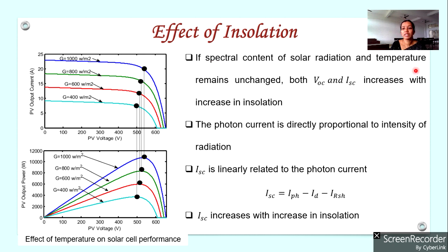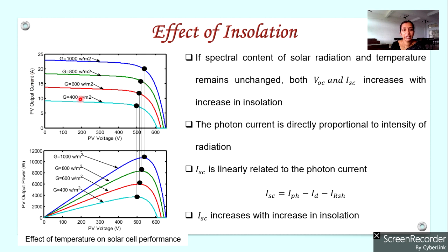Assume that both temperature and spectral content remain constant and the irradiation changes. If the irradiation increases, we can see that the short circuit current increases and also the open circuit voltage increases. When irradiation increases, both short circuit current as well as open circuit voltage increase.